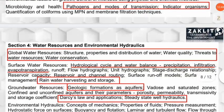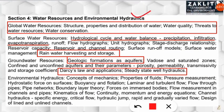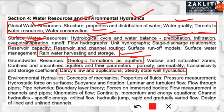Section 4 covers Water Resources and Environmental Hydraulics. You should know global water resources — percentages of fresh water and saline water — and the properties of water such as it being a universal solvent and dipolar. The hydrological cycle including precipitation, infiltration, and evaporation is essential. Rainwater harvesting components, geological formations as aquifers (including differences between aquifer, aquitard, and aquiclude), and Darcy's Law for groundwater hydraulics numericals are also key topics.